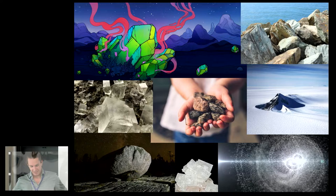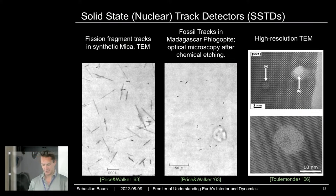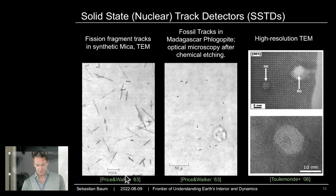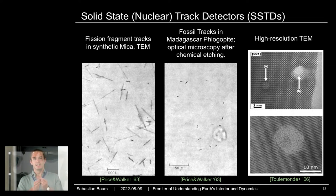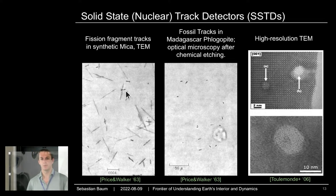This is the idea of paleo detectors, which is why I'm standing here talking to you about rocks. The basis is something many geologists are familiar with: solid-state track detectors. Since the 1960s, people have seen tracks formed by spontaneous fission of uranium — fission fragments, ions traveling through micas and other minerals — leaving a permanent damage track that you can later read out with a number of different microscopy techniques.